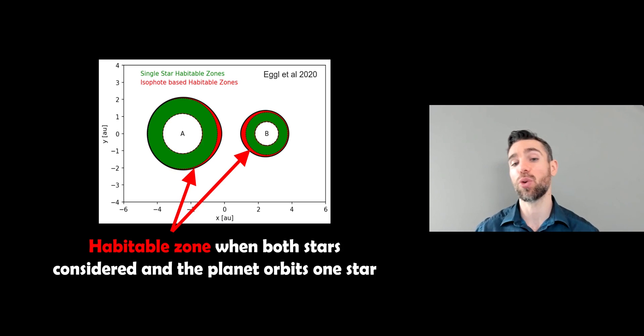And then you get this slightly distorted zone, because you've got the consideration of the component of the second star actually being considered, which then elongates it towards the other star.